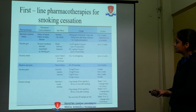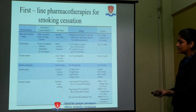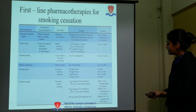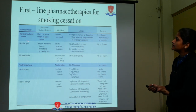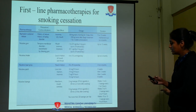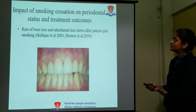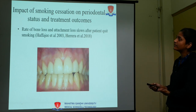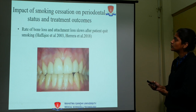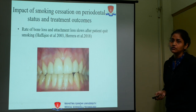Lozenge duration: weeks 1 to 6, one lozenge every 1 to 2 hours; weeks 7 to 9, taper accordingly. These were the nicotine-containing agents. The non-nicotine-containing option is bupropion sustained release. The impact of smoking cessation on periodontal status shows that the rate of bone loss and attachment loss slows after patients quit smoking. Thank you very much.